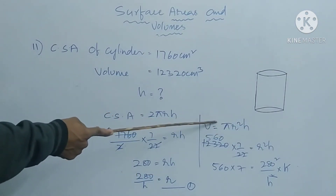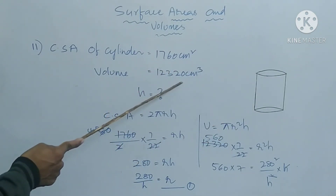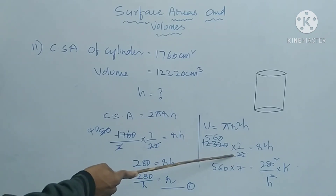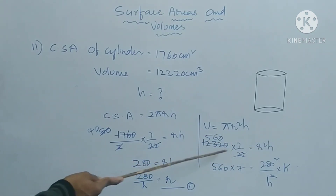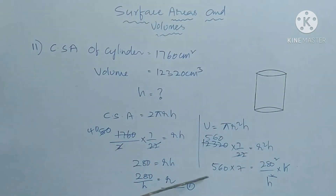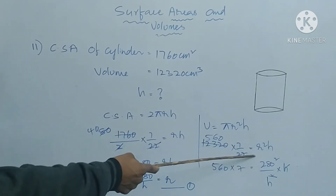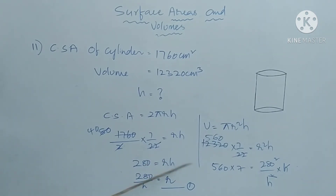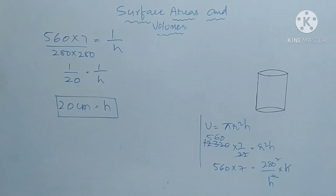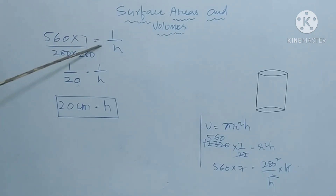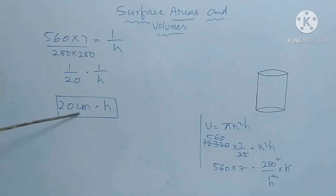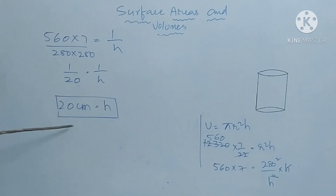Volume of the cylinder formula is πr²h = 12,320. Transposing π: r²h equals 12,320 into 7 by 22 = 3920. Substituting r = 280 by h from equation 1: (280/h)² into h = 3920, giving 280² divided by h = 3920. So h equals 280² by 3920. Calculating: 560 into 7 by (280 into 280) simplifies to 1 by 20 = 1 by h, so height h = 20 centimeters.